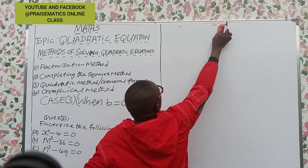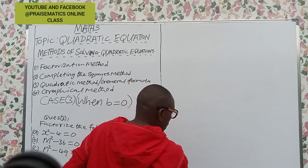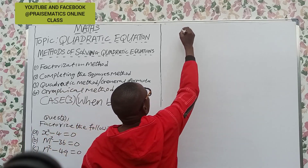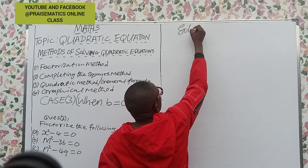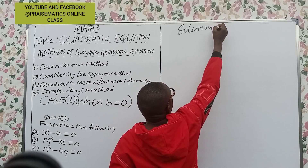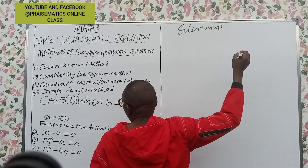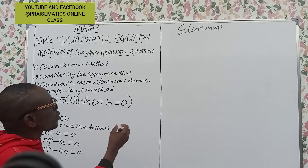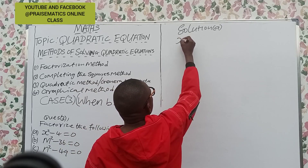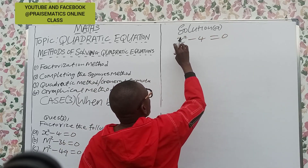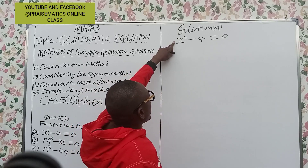So we are going to resolve them right now. I'll solve part (a) and you will solve the remainder. Solution (a): the question says x² - 4 = 0. That means the coefficient of x² is 1.